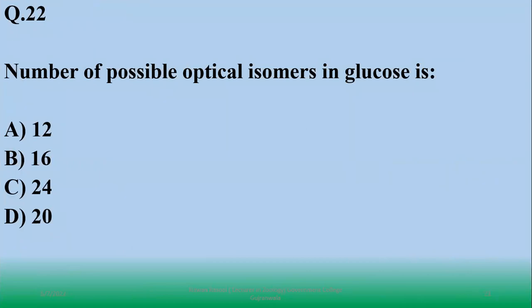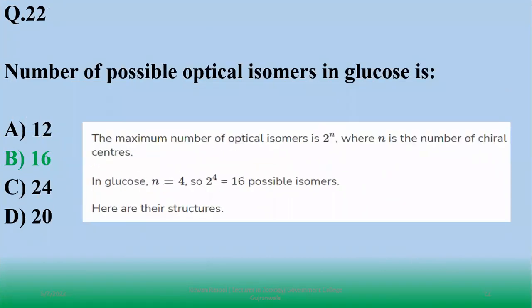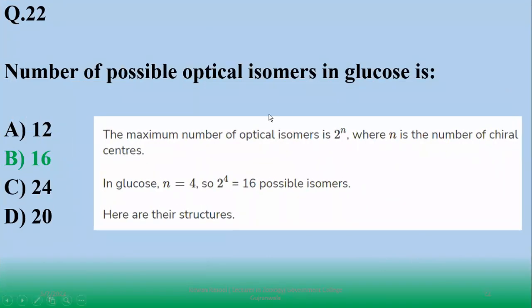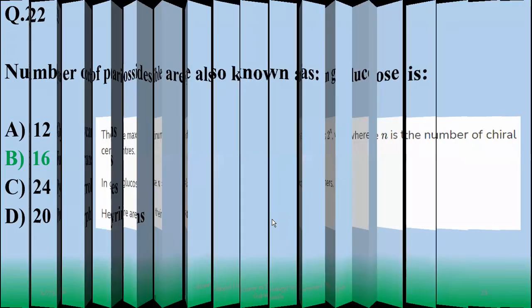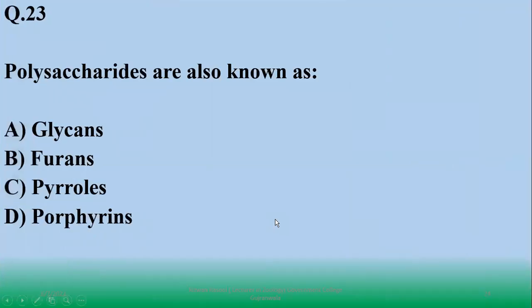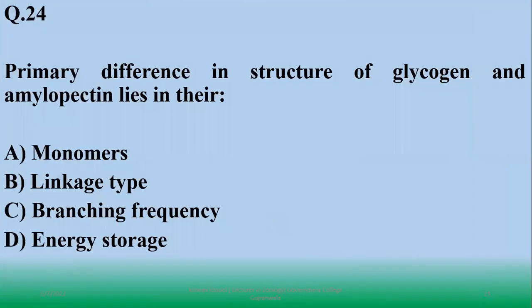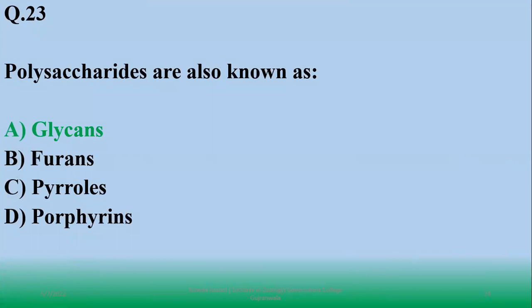Number of possible optical isomers of glucose. Optical isomers formula is 2 to the power n, where n is number of chiral centers. Glucose structure has 4 chiral carbons, that's why right option is 16. Polysaccharides are also known as glycans.